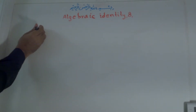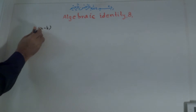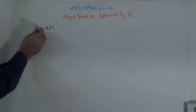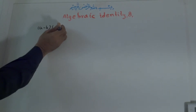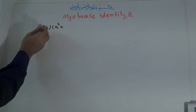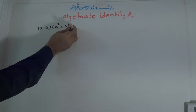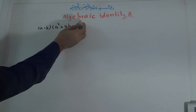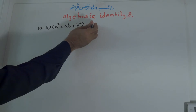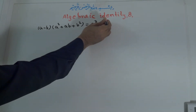If we have a binomial A minus B times a trinomial — the square of the first term A², plus the first term times the second term AB, plus the square of the second term B² — if we multiply these two, the result will be A³ minus B³.